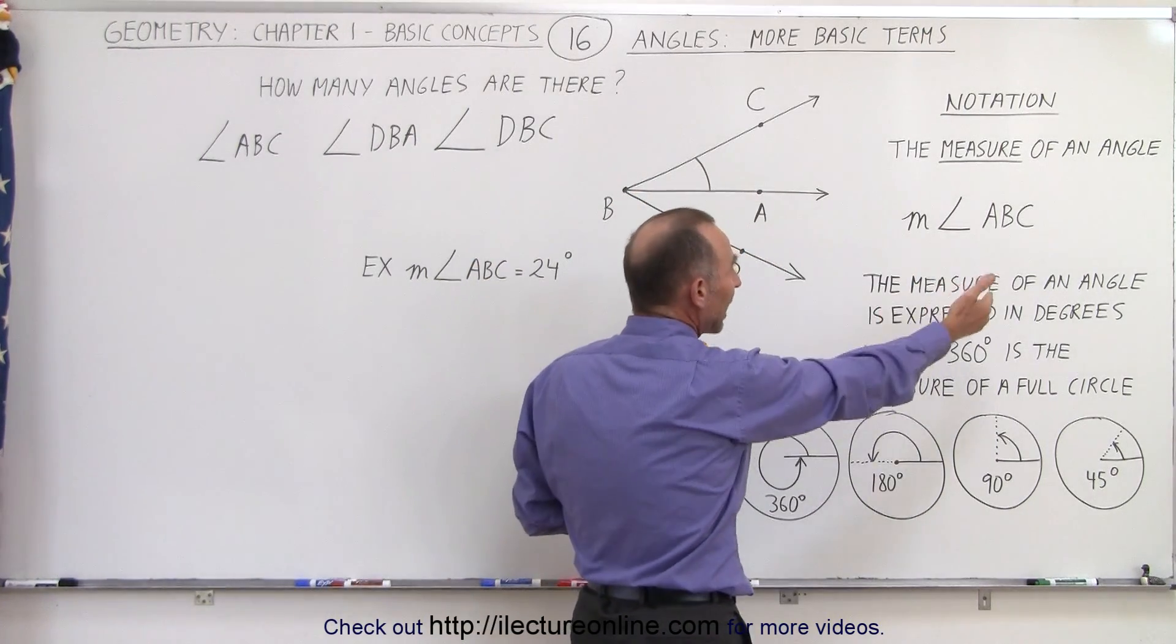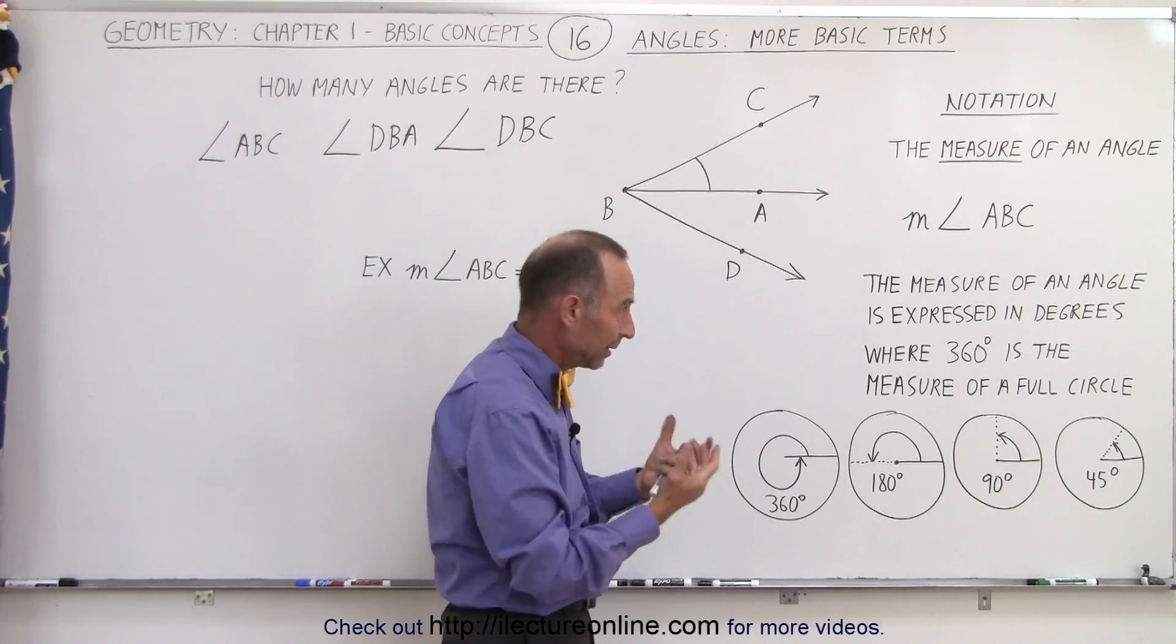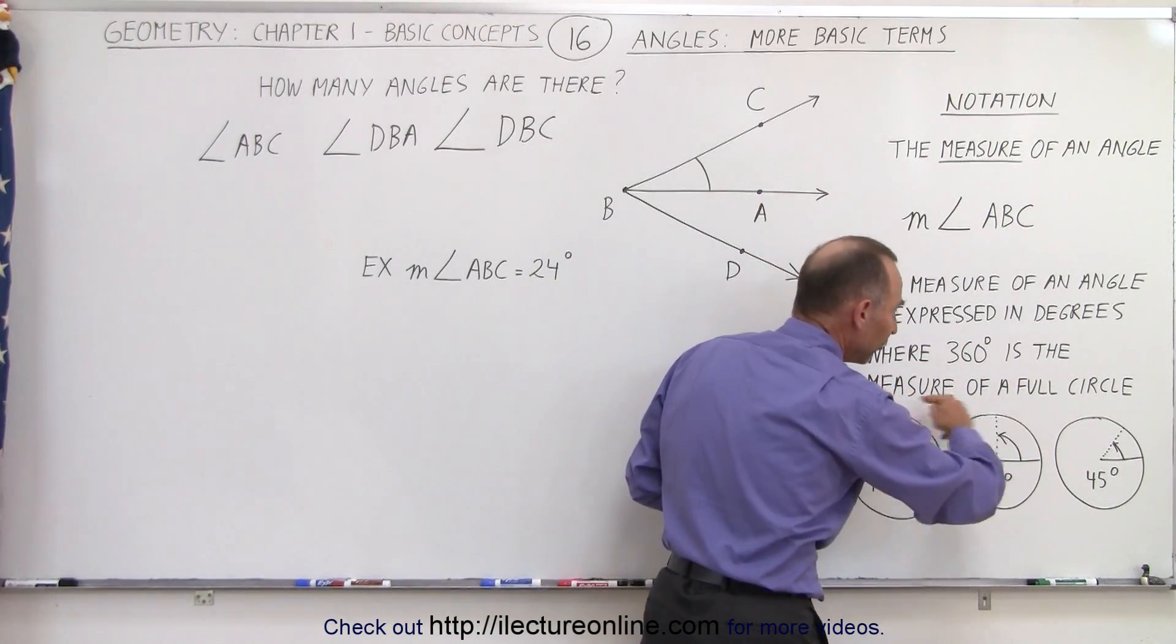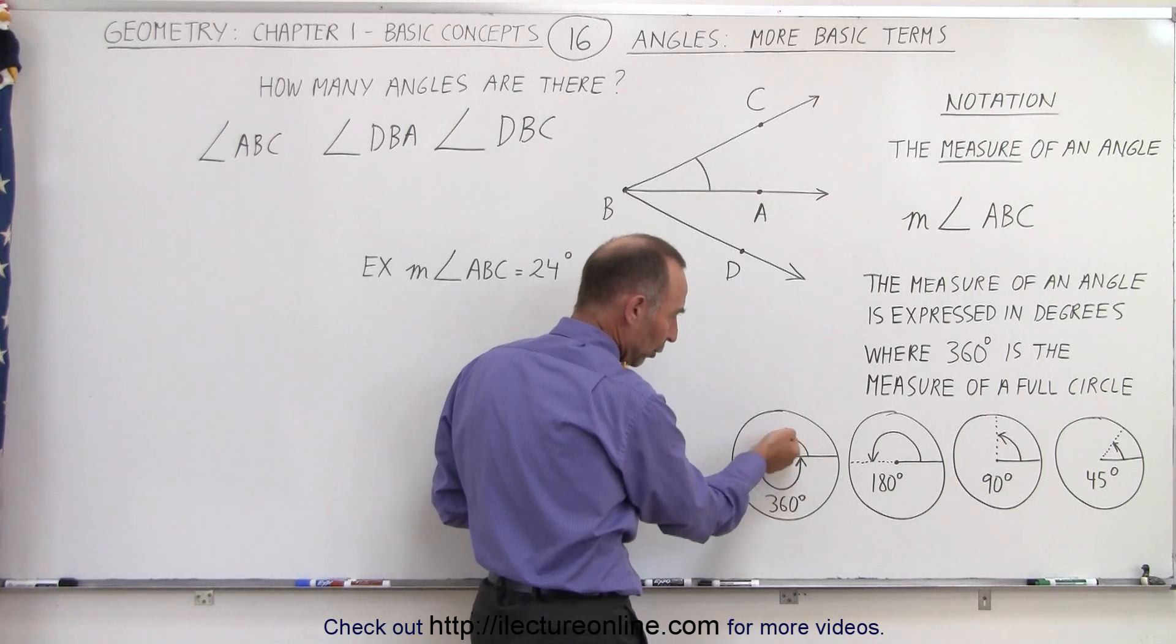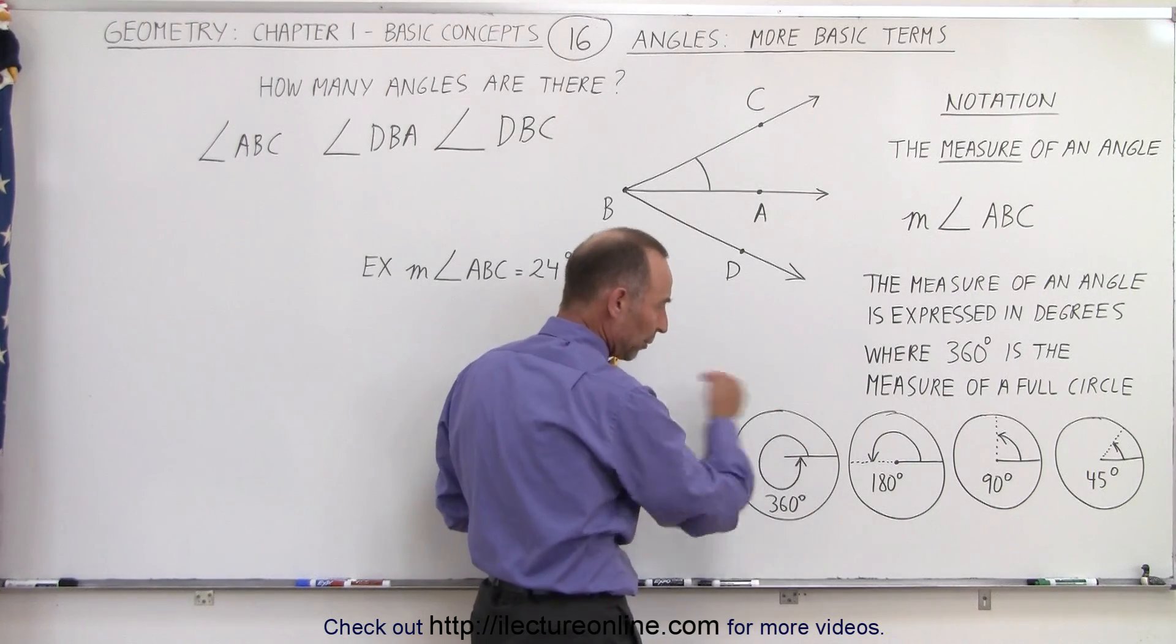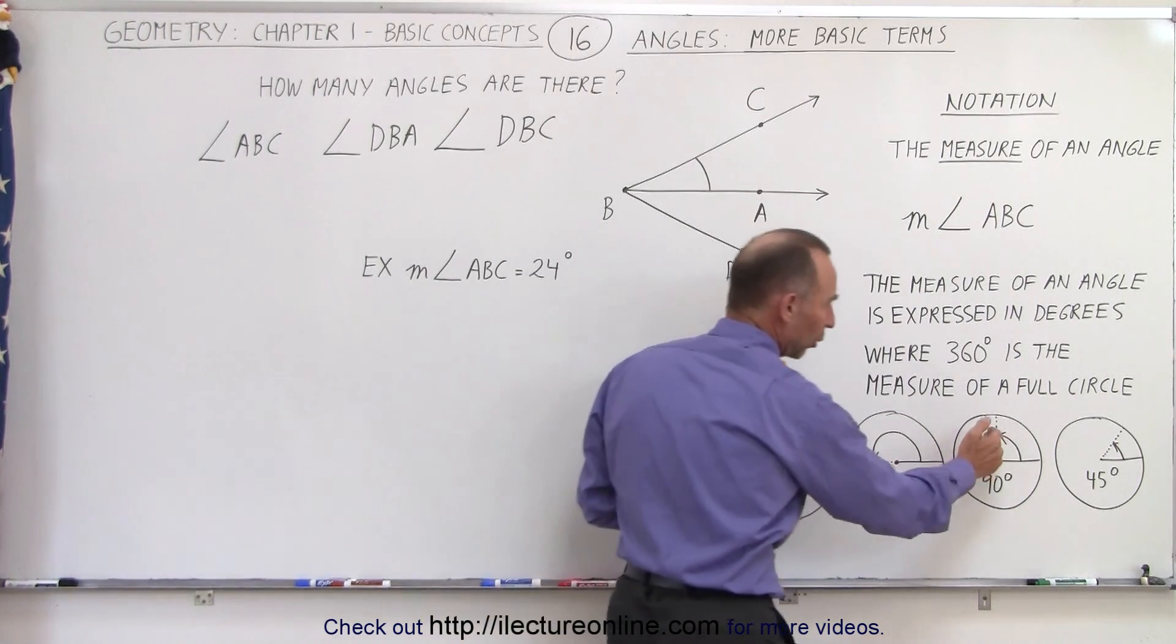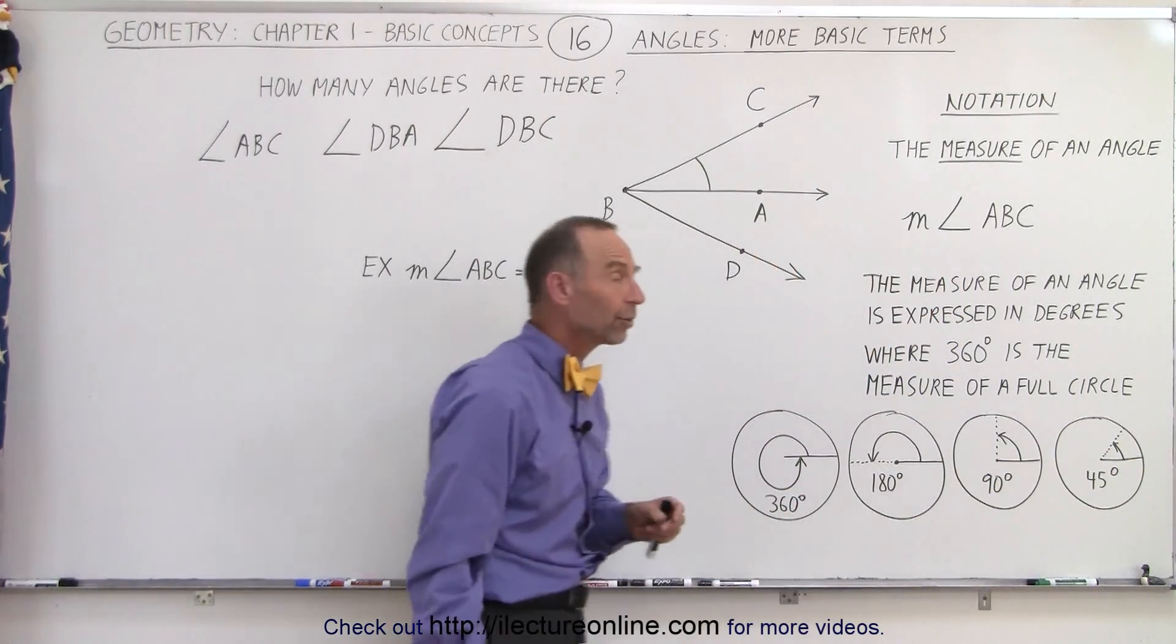The measure of an angle is always expressed in degrees. If we want to have a relationship there, we can say that there's 360 degrees in the full measure of a circle. When we start at one end here and go all the way around the circle, that's equivalent to 360 degrees. So half a circle is 180 degrees, a quarter circle is 90 degrees, and half of that would be 45 degrees.